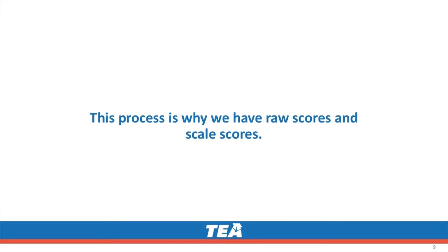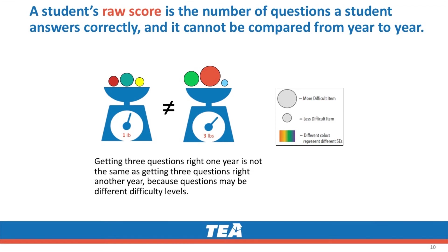This process is why we have raw scores and scale scores. A student's raw score is the number of questions a student answers correctly on a test. Raw scores cannot be compared from year to year. For example, getting three questions right one year is not the same as getting three questions right another year, because the questions may be different difficulty levels.